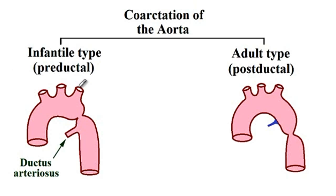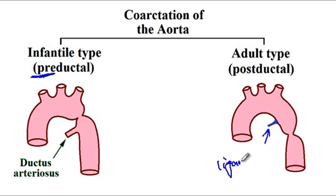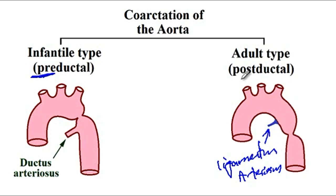What this term means is that with pre-ductal, the coarctation is proximal to the ductus arteriosus, so the name pre-ductal is given to it. With the adult type, the coarctation is distal to the ductus arteriosus, which in adults turns into the ligamentum arteriosus. Since the coarctation is distal to the ligamentum arteriosus, the name post-ductal is given to it.